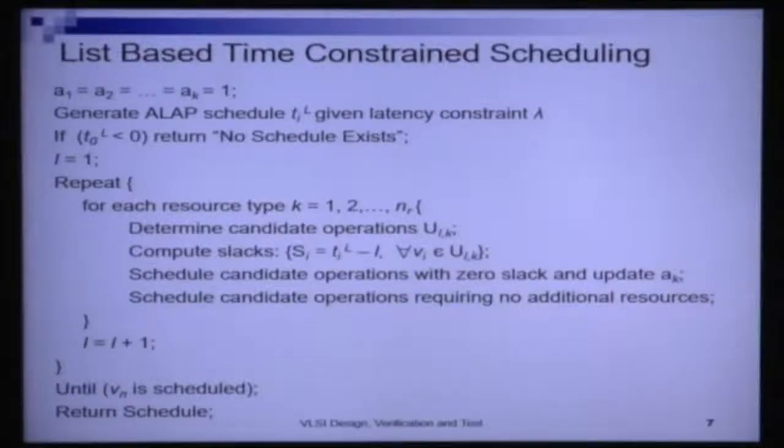To reiterate: what is the problem of time constraint scheduling? It is the problem of scheduling the operations in an operation constraints graph within a given time bound latency known as lambda, using the minimum area. We measure this minimum area in terms of the resources it uses. Each resource type has a cost which is a measure of the area it is expected to take on the floor of the chip. The problem is to minimize the summation over cost of the resource into number of resources. We looked at the optimal version of that problem, and today we will look at heuristic solution strategies.